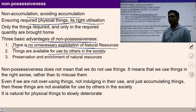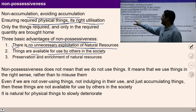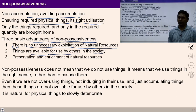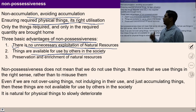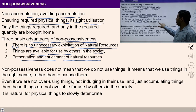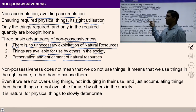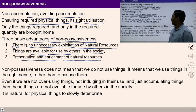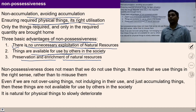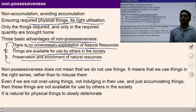With non-accumulation and non-possessiveness, I am no more a burden on physical resources and on nature. Second, things become available for other people if I live with non-accumulation. And third, preservation and enrichment of natural resources happens naturally. Once I am able to identify my needs and rightly utilize things, then preservation and enrichment of natural resources becomes natural.